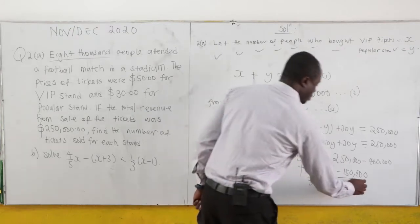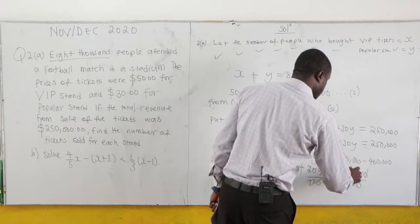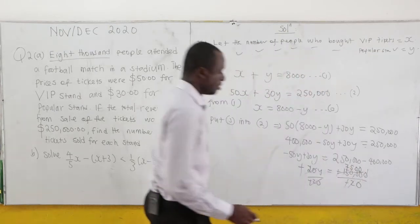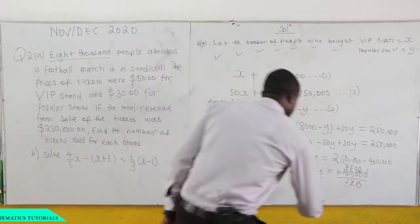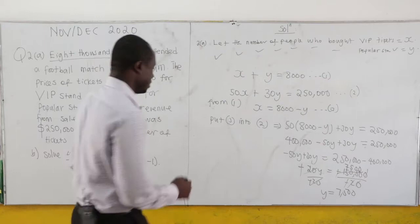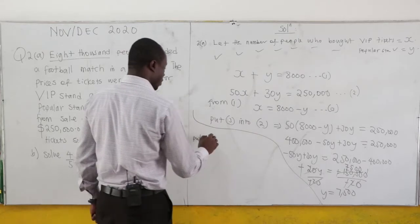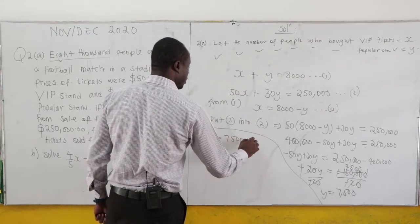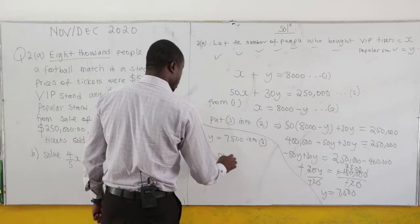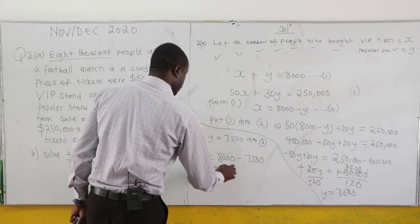Dividing both sides by negative 20: the negatives cancel, and 2 goes into 150 to give 75, making the result 7,500. So Y equals 7,500. We then substitute Y equals 7,500 into equation 3 for X. So X equals 8,000 minus 7,500, which is 500.